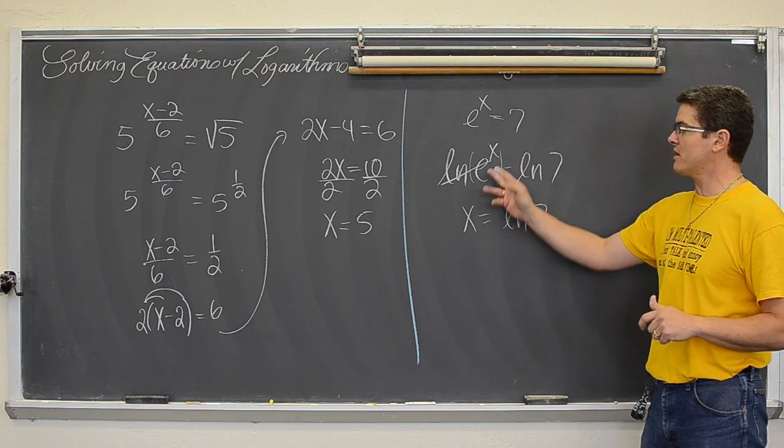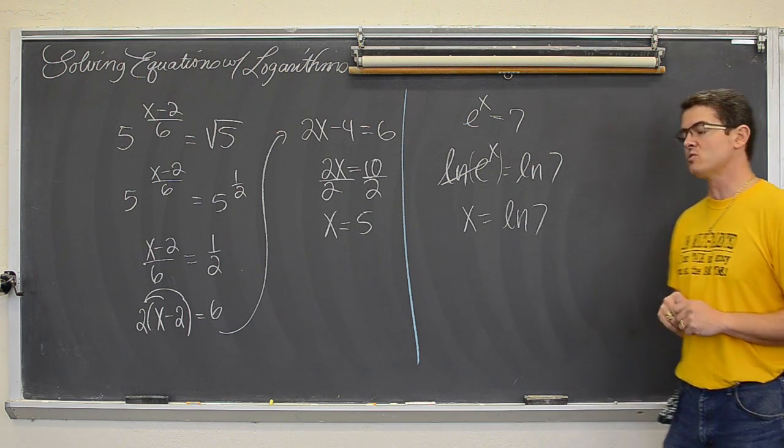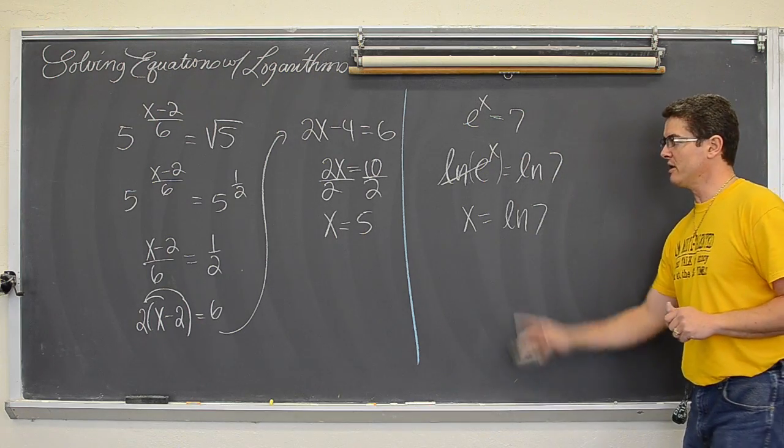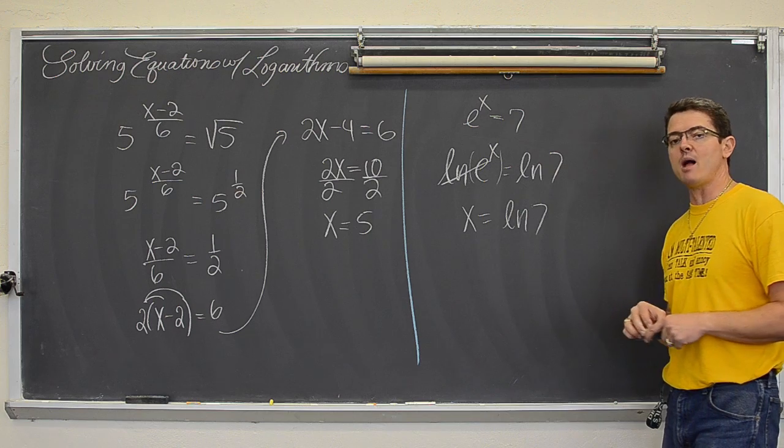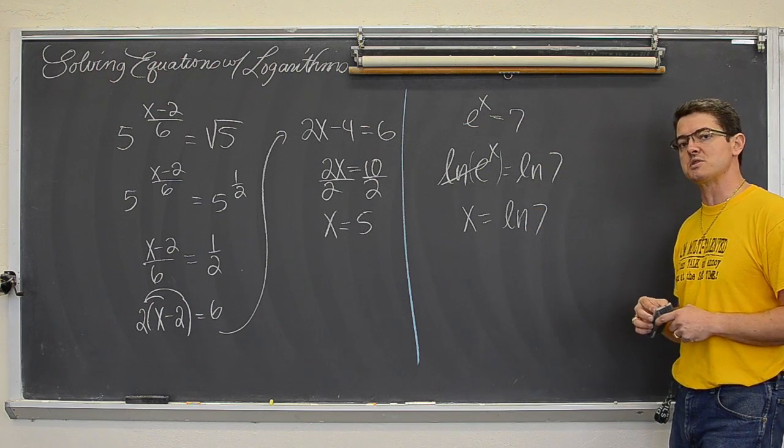So if the base of your log is the same as the base of what you are logging, those functions will cancel out and the variable in the exponent may occasionally just drop down on the main line of the problem and all of a sudden you have saved quite a few steps.